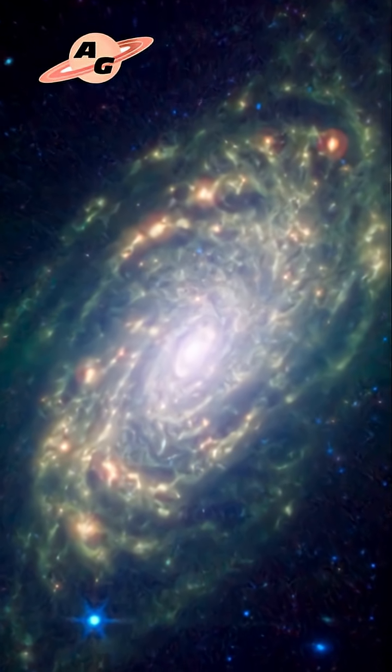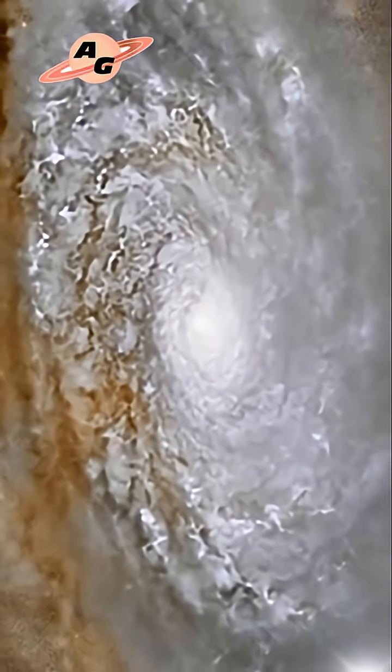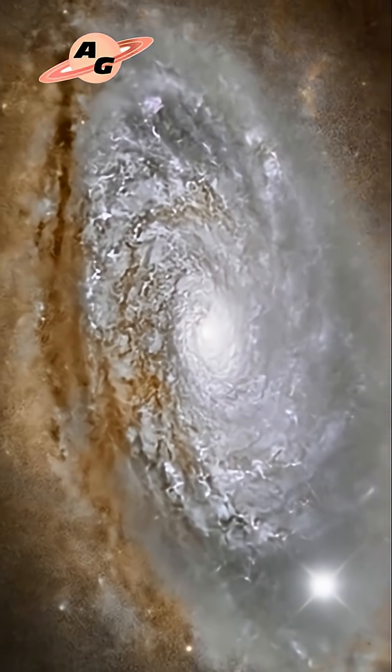Meanwhile, the galaxy's outskirts and arms have a characteristic bluish tint, indicating a predominance of young, hot stars and regions of active star formation in this region.